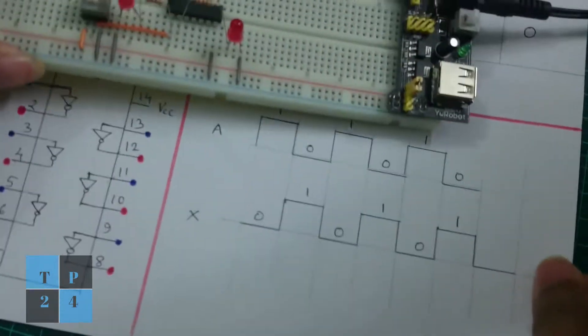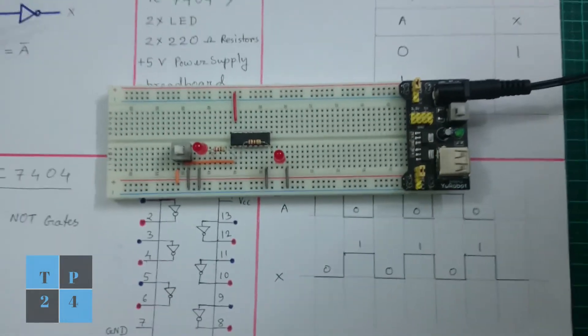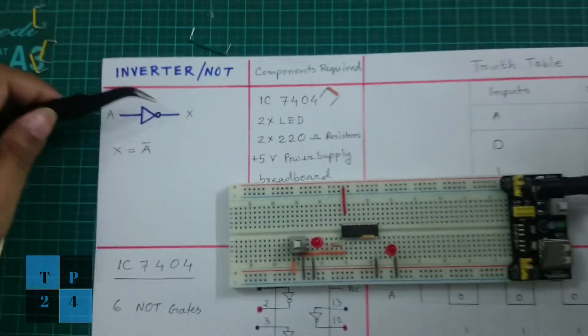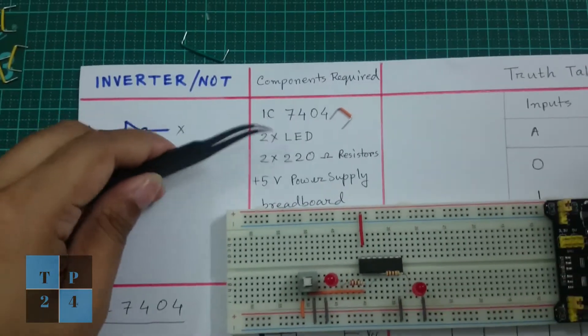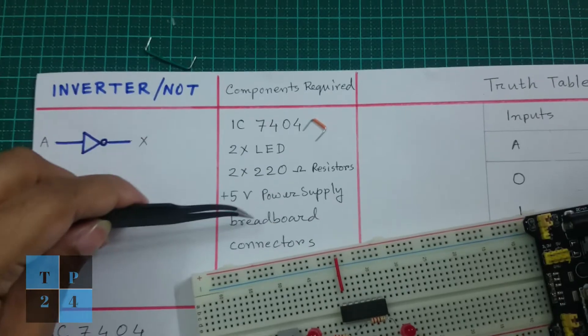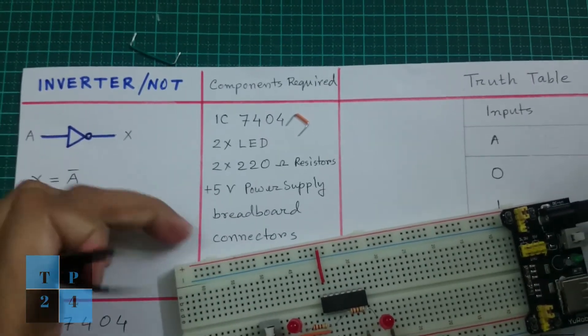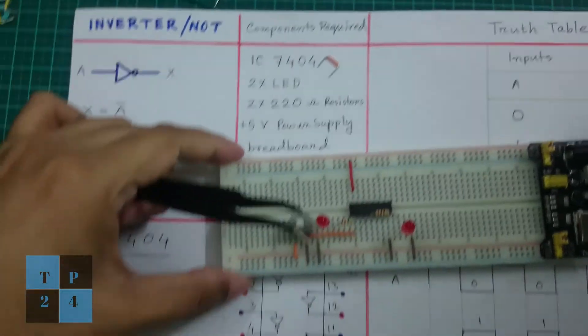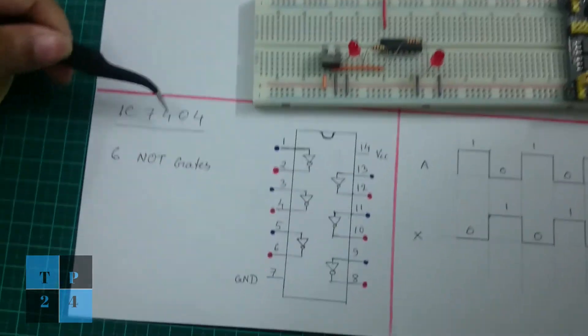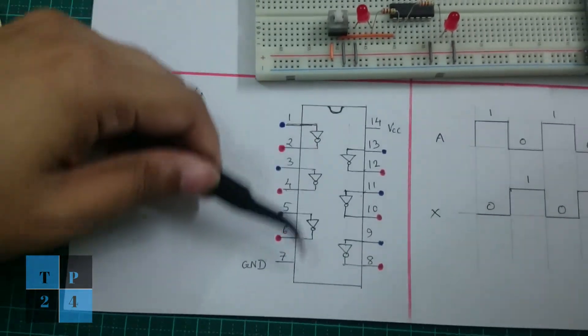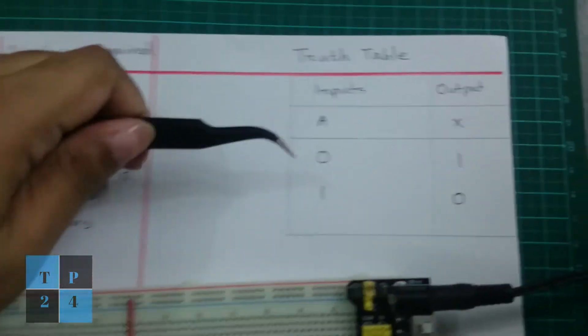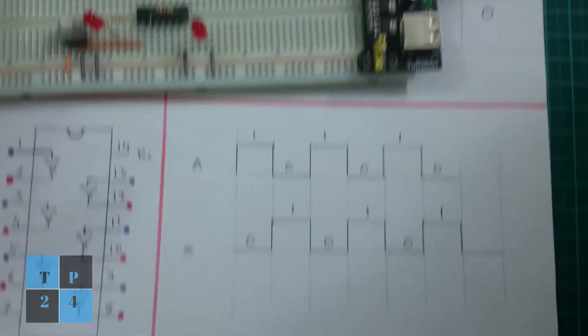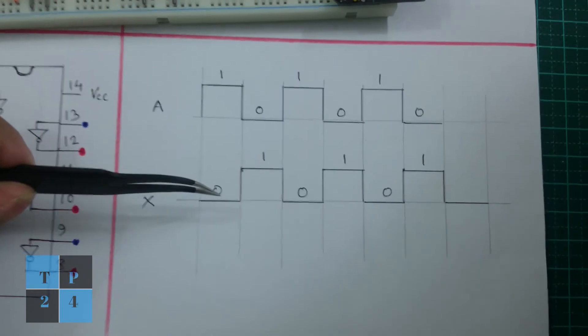In this video I talked about the inverter or NOT gate, its symbol, Boolean expression, and the components required to construct this circuit diagram and the IC7404 and its pin diagram. Also I explained a bit about the truth table and the pulse waveform for inverter operation.